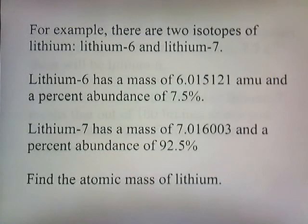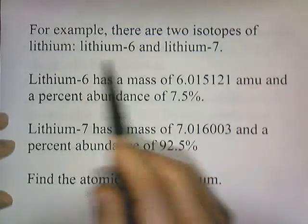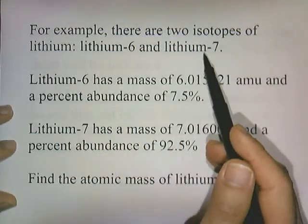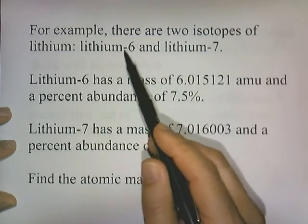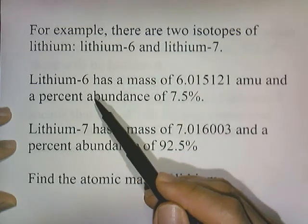For example, in nature there exist two isotopes of lithium: lithium-6 and lithium-7. So if you had a bag full of lithium and started sorting through it, some of it would be lithium-6 and some of it would be lithium-7.